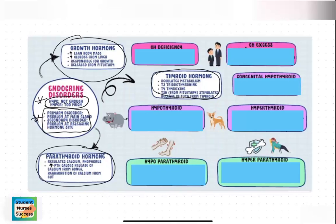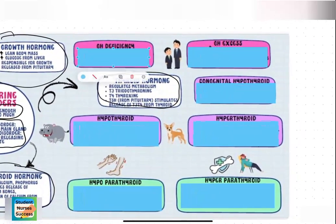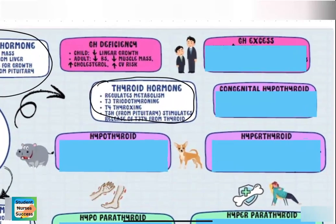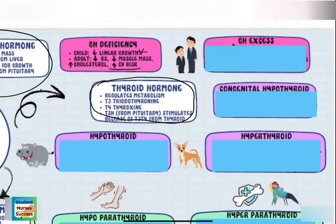Now let's talk about what it means to have either a growth hormone deficiency or growth hormone excess. In growth hormone deficiency, it depends on whether it's a child or an adult experiencing it. In a child, you're primarily going to see a decrease in linear growth — they're not going to be as tall. In an adult who develops growth hormone deficiency, you're going to see a drop in blood sugar, decreased muscle mass, an increase in cholesterol levels, and an overall increase in cardiovascular risk.